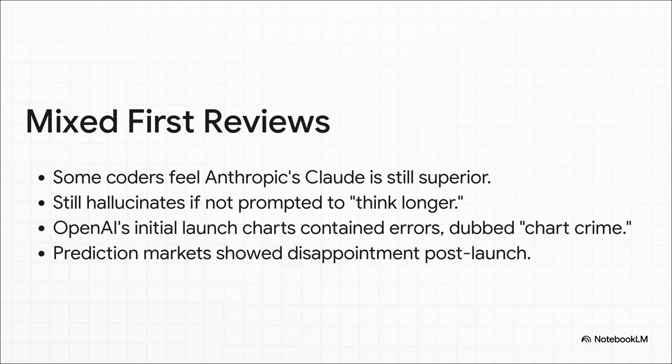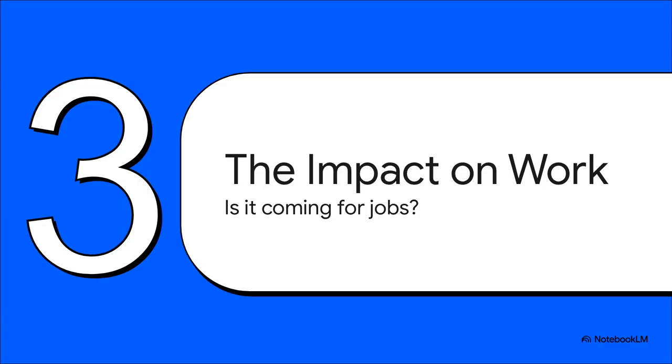Some really good coders are saying they still prefer Anthropic's model Claude. And GPT-5 can still make stuff up or hallucinate if you don't specifically tell it to think longer. Heck, even OpenAI's own charts in the launch announcement had mistakes, which people online immediately called chart crime. So if it's a big step up, but not a total revolution, what does that actually mean for us, for the real world?